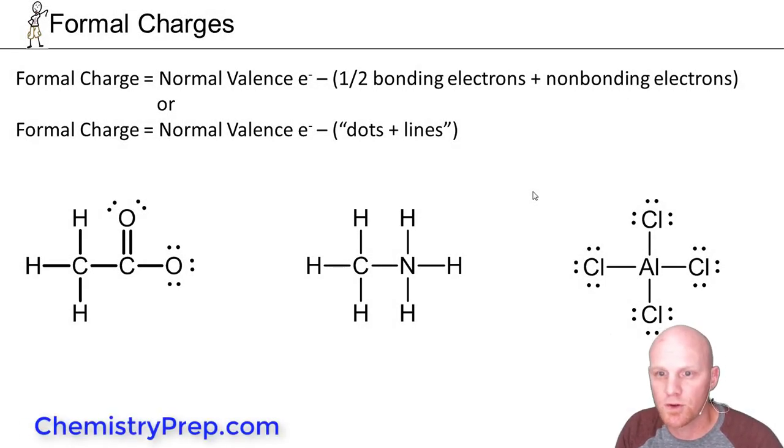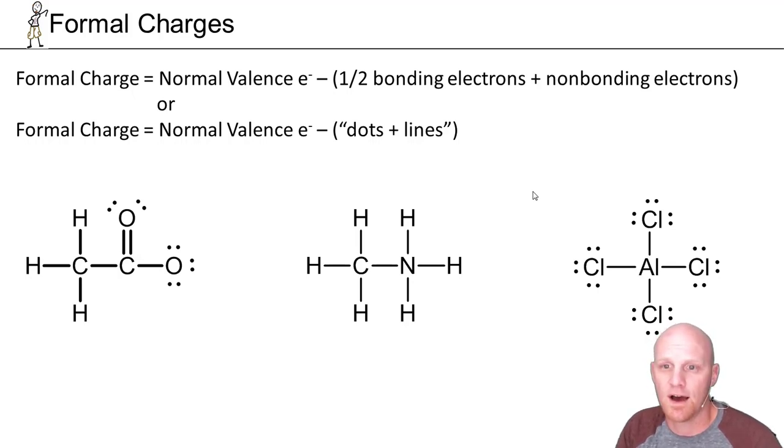So to finish off our discussion of Lewis structures, we're going to talk about what are termed formal charges. Formal charges are simply a way of keeping track of who's got more or less than the normal number of valence electrons they'd have. The way this works, there's a formula for formal charge.